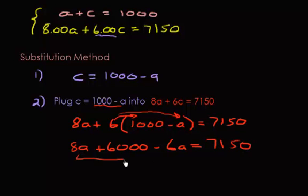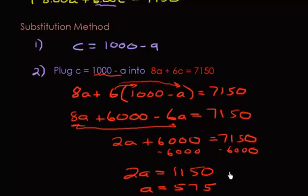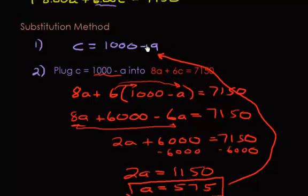Collect like terms. 8A minus 6A is 2A, so 2A plus 6,000 equals 7,150. Subtract 6,000 from both sides to get 2A equals 1,150. Solving for A, we get 575, which is exactly what we got in the addition method. To find C, plug this back in and you'll get C equals 425.